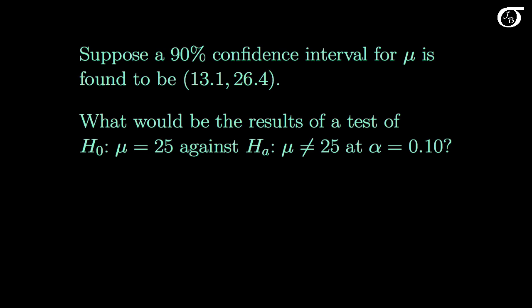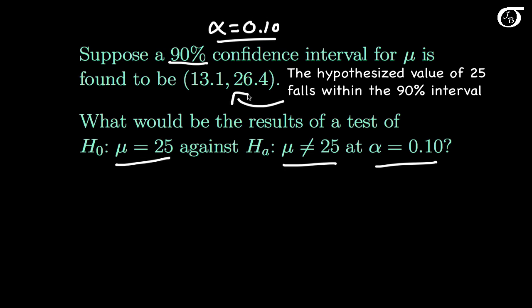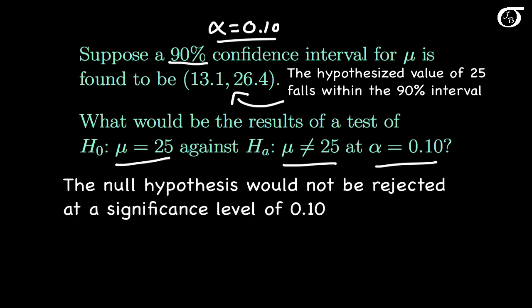Suppose a 90% confidence interval for mu is found to be 13.1 to 26.4. What would be the results of a test of the null hypothesis that mu is equal to 25, against a two-sided alternative at an alpha level of 0.1? A 90% confidence interval corresponds to an alpha level of 0.10, so the two alpha levels are the same, and the alternative is two-sided, so there is a direct relationship. The hypothesized value of 25 falls within this interval, and so we would not reject the null hypothesis at an alpha level of 0.1.